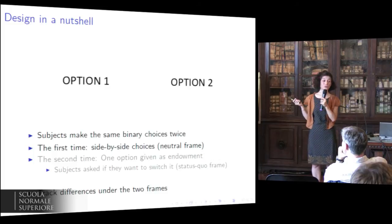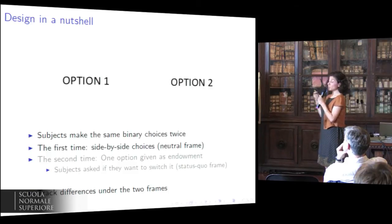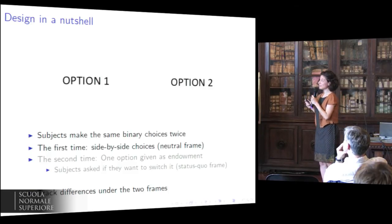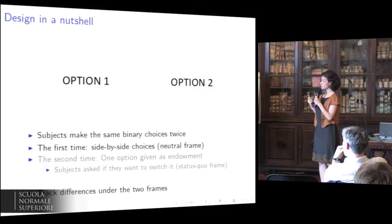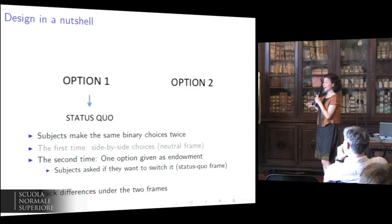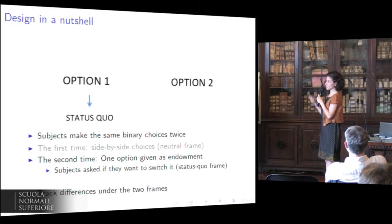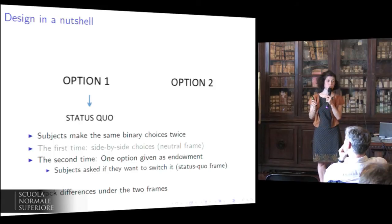I'm going to be very brief on the experimental design and details, but please ask me any questions either at the end of the talk or later today. We adopt a within-subject design where subjects make the same binary choices twice. The first time, they take choices based on a side-by-side comparison between two options — we refer to this as the neutral frame. The second time, one option is given to them as an endowment, and the subjects are asked if they want to keep it or switch it for the alternative — we refer to this as the status quo frame. We track differences in choices between the two frames to see if there is any emergence of the bias.